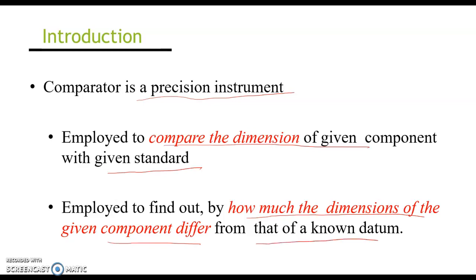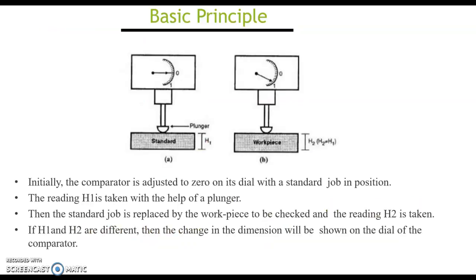The basic principle of comparators is shown in these pictures. In the first picture, the comparator is set using a standard workpiece or a gauge block — a known dimension is provided and the zero of the comparator is set using that dimension. Then, instead of the standard piece, it is replaced with the workpiece and the deflection is noted.